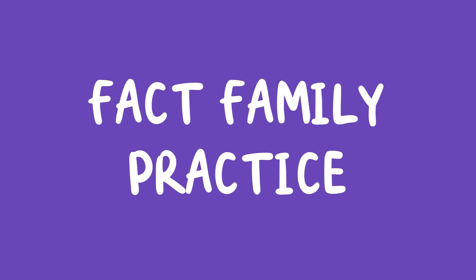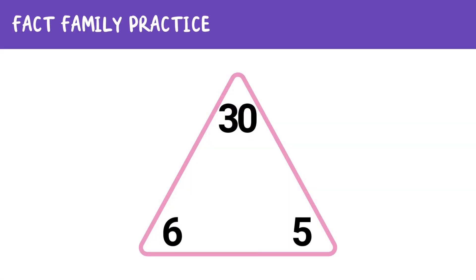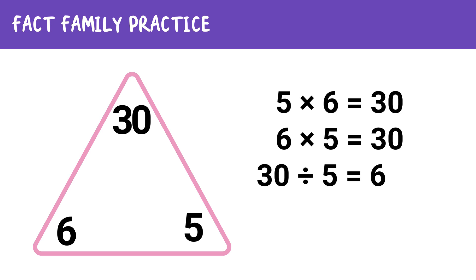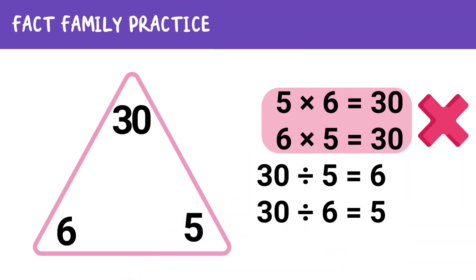Let's practice using fact families. Let's build a fact family using 5, 6, and 30. If we start with multiplication, we have 5 times 6 equals 30, and 6 times 5 equals 30. Now let's use those same numbers for division. If we start with 30, we can divide it by 5 to equal 6, or 30 divided by 6 to get 5. So this fact family has 4 facts: 2 multiplication facts and 2 division facts.